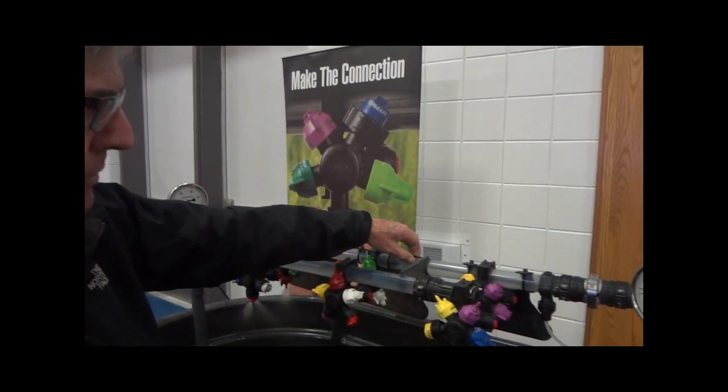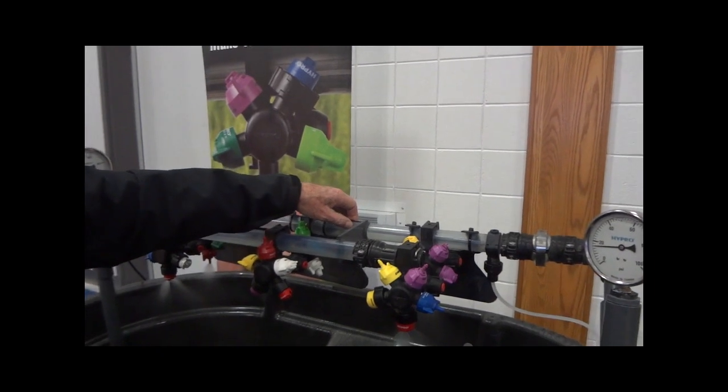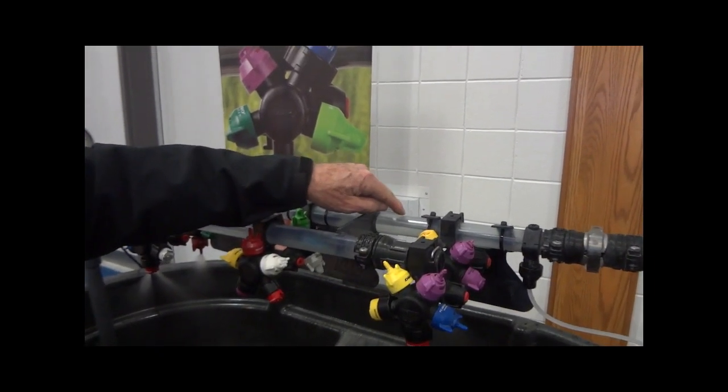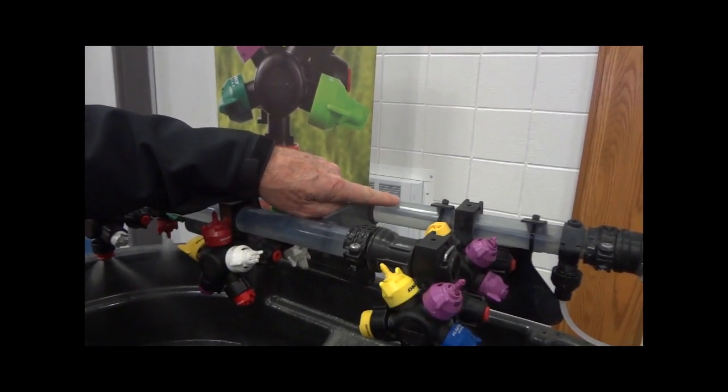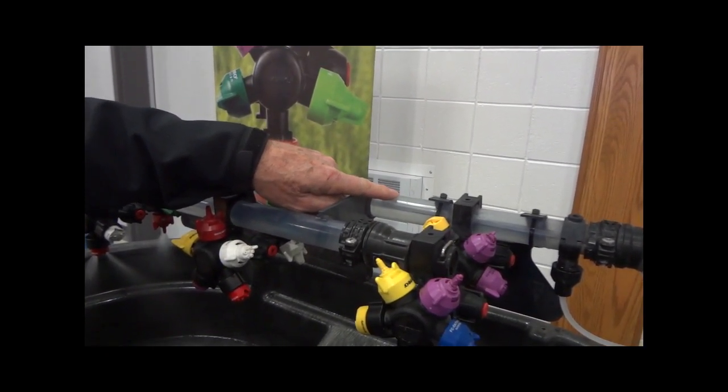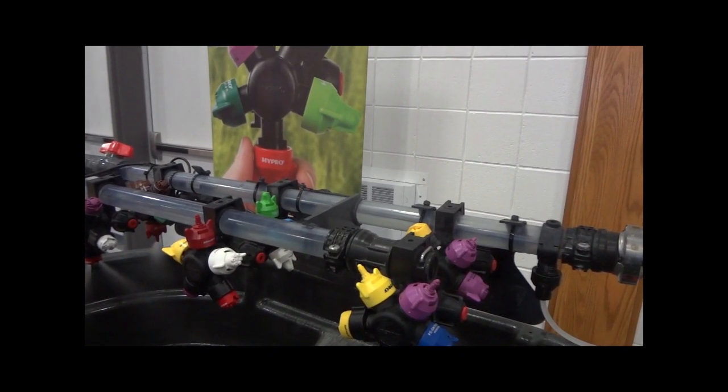We have a clear boom back here that would be a typical boom size in application. It's got a water line up to my finger and above that you've got air. That's a common look at what would be inside a traditional boom.